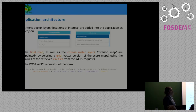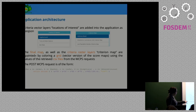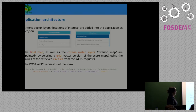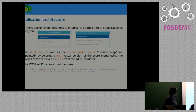The WCPS requests are very simple: you call the different layers, make the map algebra, and request your data. In our case we use CSV, but you can also request TIFF or JPEG.